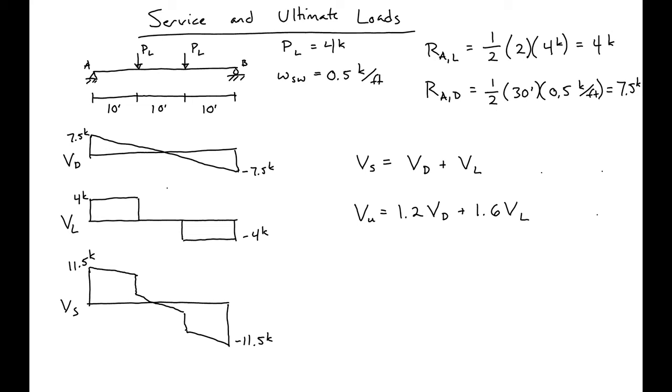So in our case, it's going to be 1.2 times our dead load, which is seven and a half kips, plus 1.6 times our live load, which is four kips.